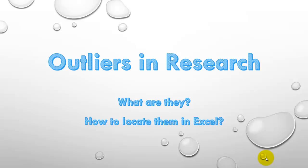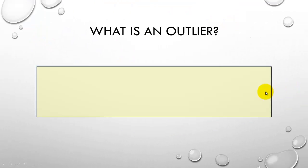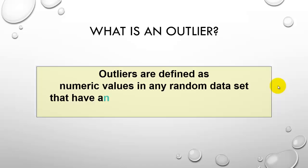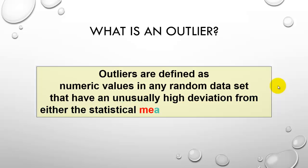In this video, we will discuss how to deal with outliers in your research. First of all, what are they and how do we locate them in Excel? The technical definition is that outliers are numeric values in any random dataset that have an unusually high deviation from either the statistical mean or the median value in statistics.